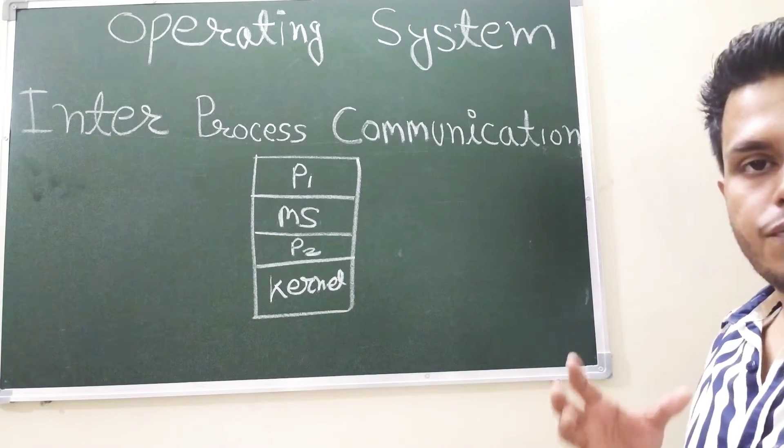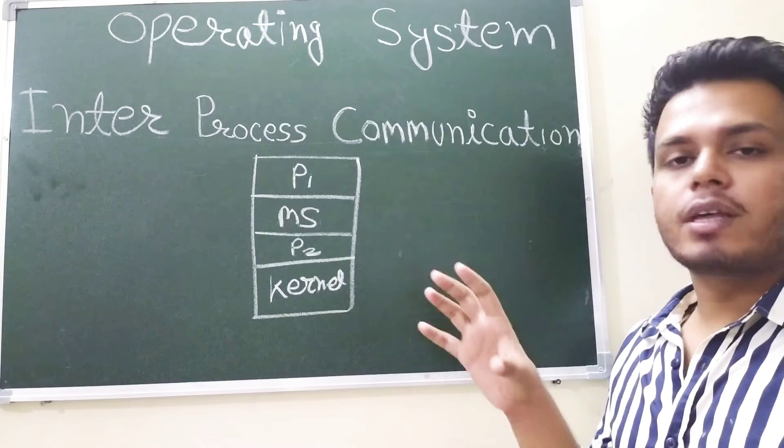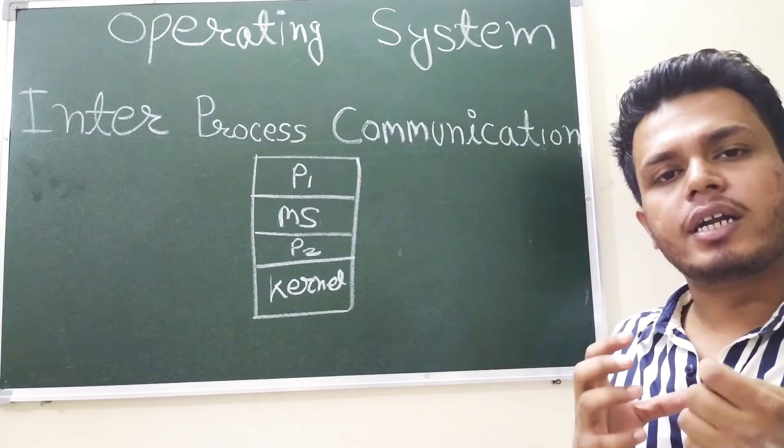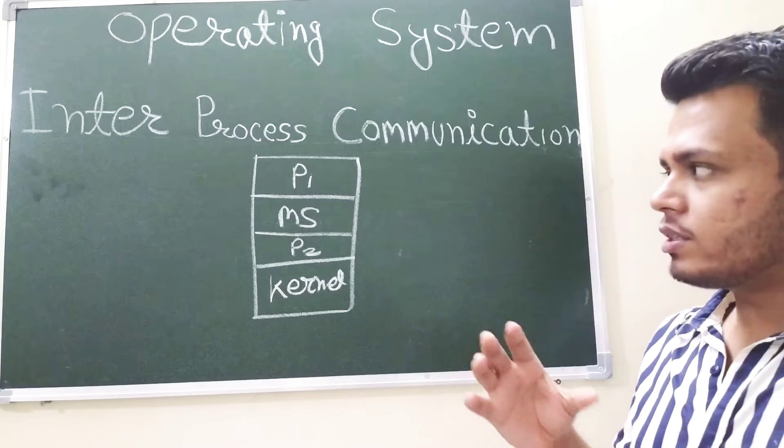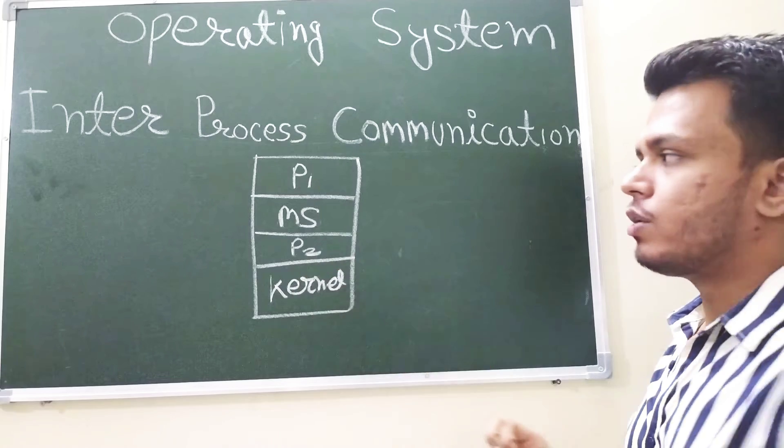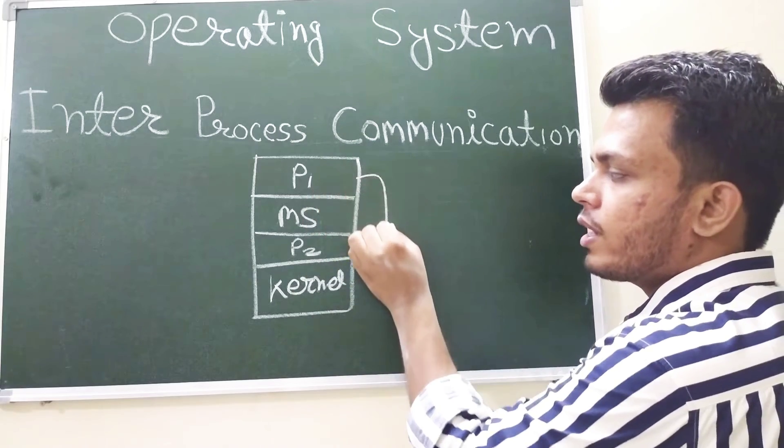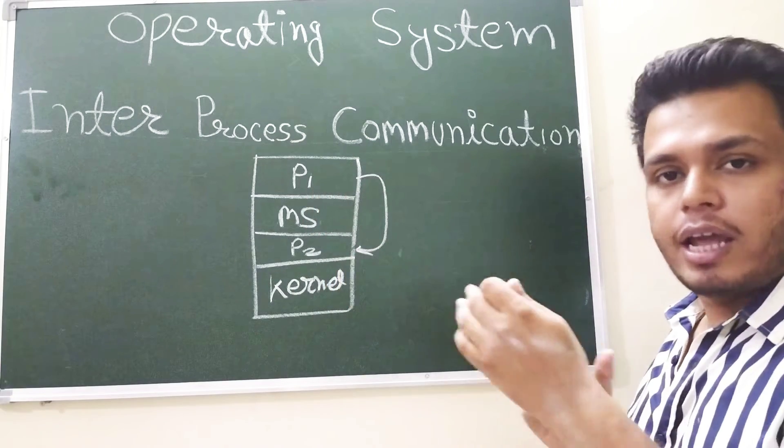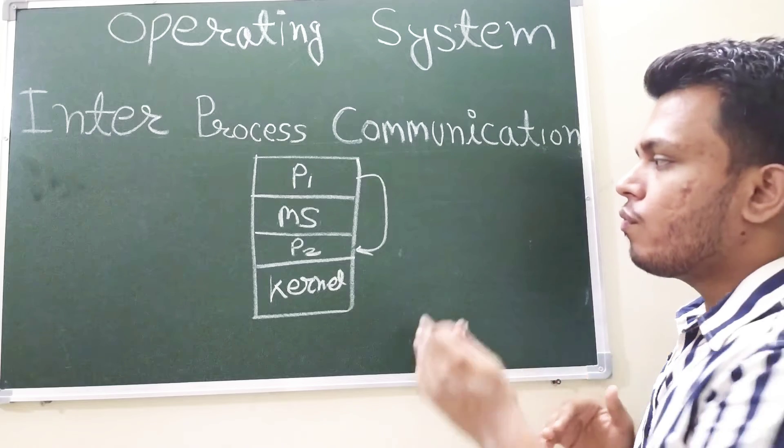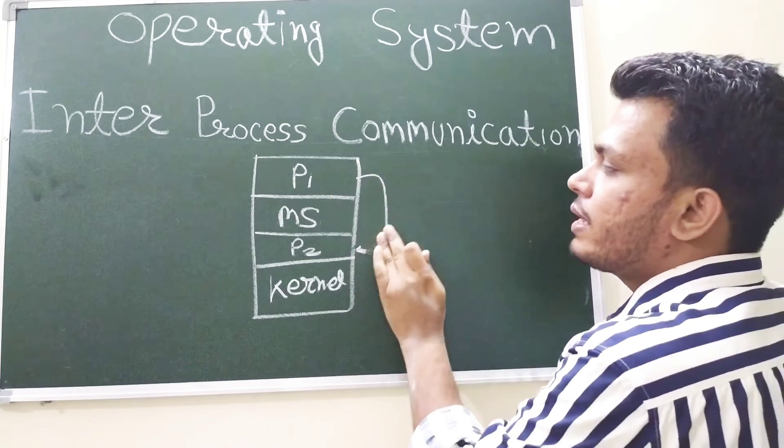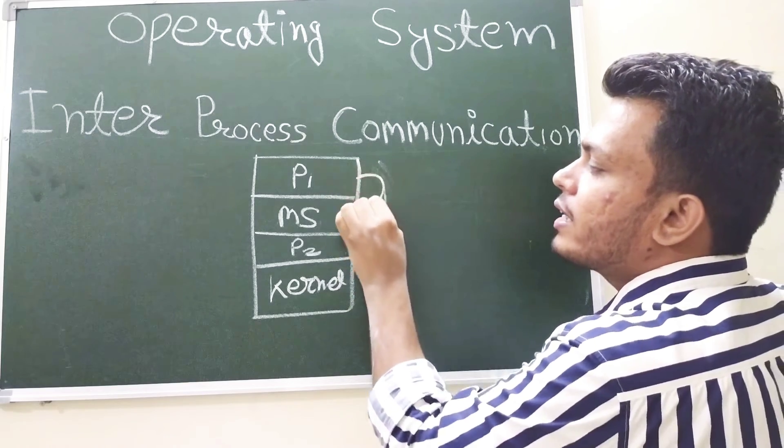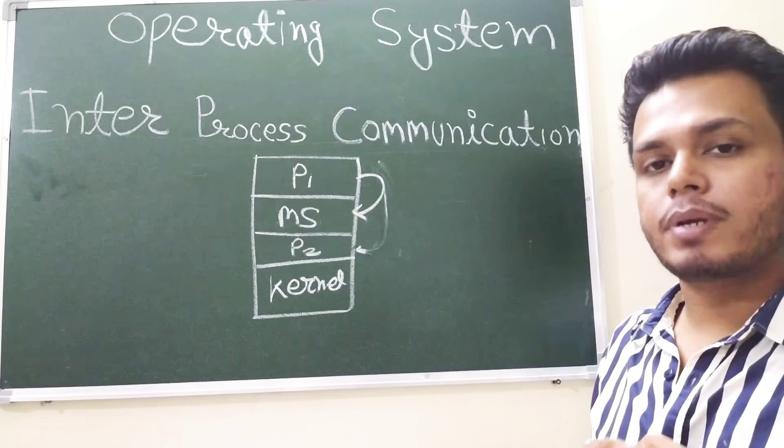Actually what we do, we create a pool between the processes or you can say in main memory, we design a pool in which if P1 wants to communicate to P2. Suppose P1 wants to communicate to P2, it cannot directly communicate. So what it will do, it will simply write its message inside the memory space.